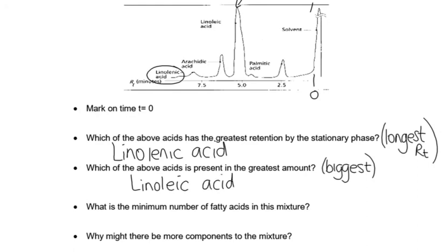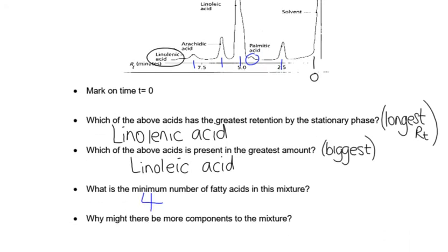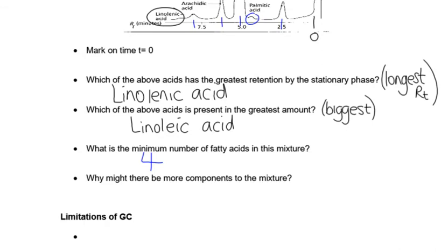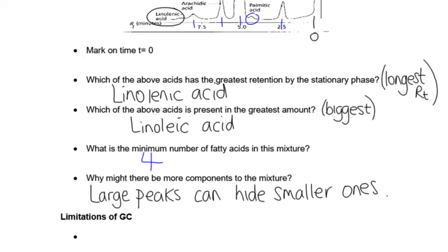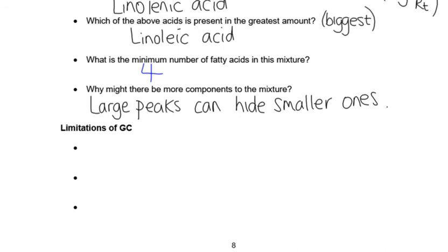Which one is present in the greatest amount? Remember that that's the biggest peak. Fortunately, we have very similar names. What's the minimum number of fatty acids? You have to count the peaks. Now, we've got definitely one, two, three, four. You could argue that there's another one there, but we're not really sure. So at minimum, we've definitely got four. Why might there be more? Well, large peaks can hide smaller ones.